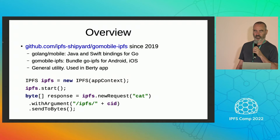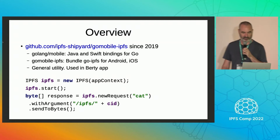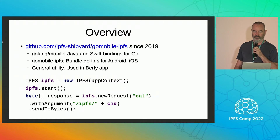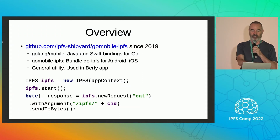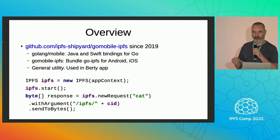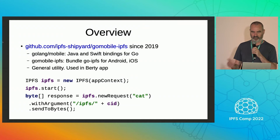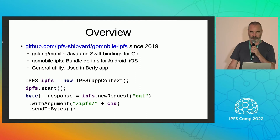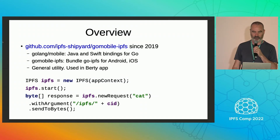It is a general utility, and part of the idea of this talk is to see if you want to try it. It is used in the Birdie messaging app. Here's a quick code sample — this is in Java. You create an IPFS object and then call start, which starts the IPFS node on the phone. The application on the phone interacts with the IPFS node using the Kubo RPC API, where you send a command like cat and give it the CID, and the response comes back for your Java or Swift application to use.